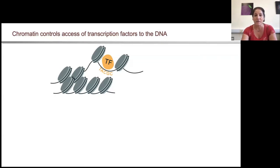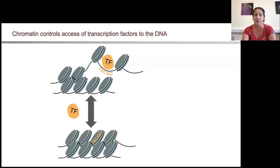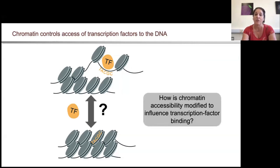The DNA genome isn't sitting naked in a cell — it's wrapped around histones to form nucleosomes, and these are further compacted to secondary and tertiary structures, which can include transcription factor binding. So really, if we want to understand how this genome is interpreted, we have to understand how chromatin accessibility is modified to influence the binding of these transcription factors.